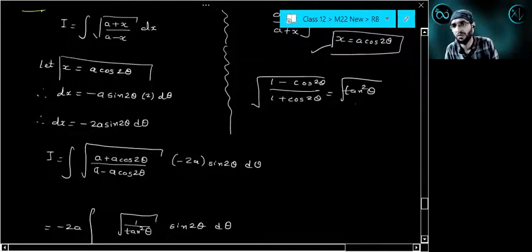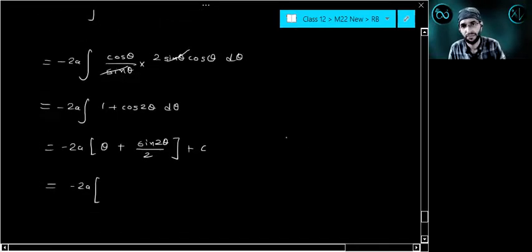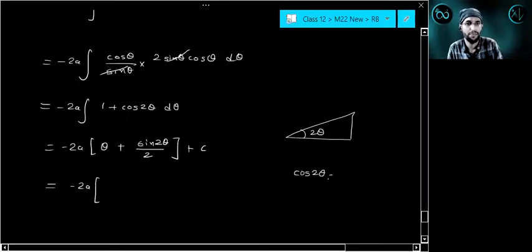The answer is 2a times the integration formula. To get theta, substitute cos 2 theta equals x by a, so theta equals cos inverse x by a directly.